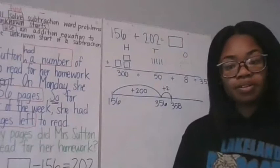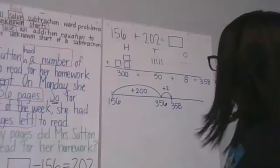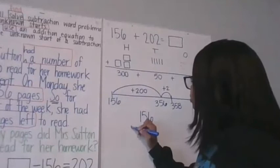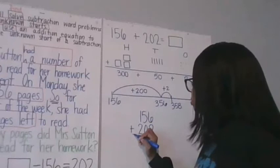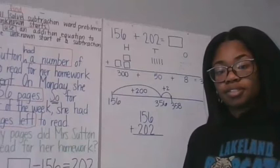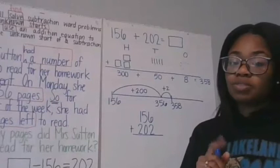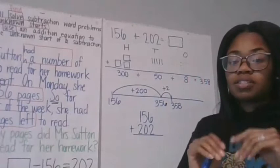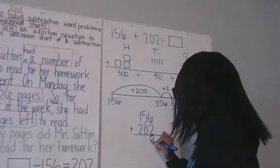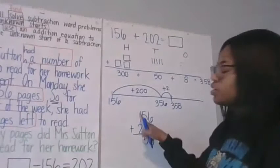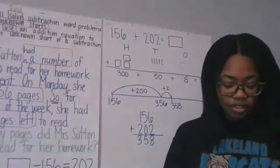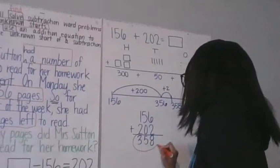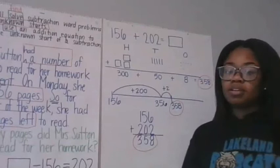Let's ramp up efficiency even more with the standard algorithm. 156 plus 202. We start in the ones column so we can regroup if needed: 6 plus 2 equals 8; 5 plus 0 equals 5; 1 plus 2 equals 3. With each strategy we came up with the same solution: 358.